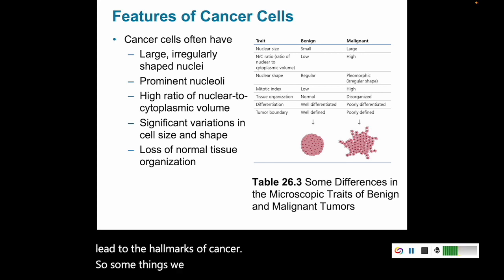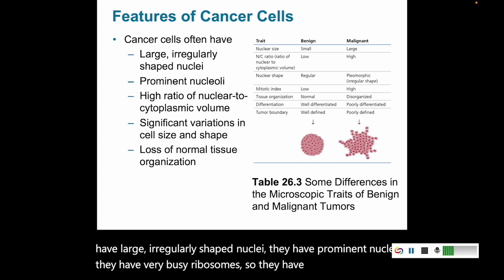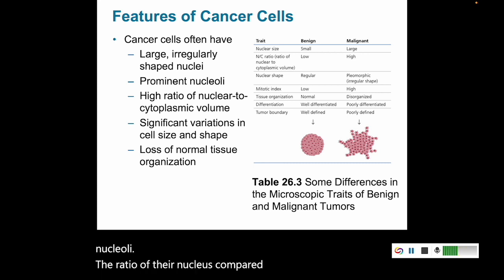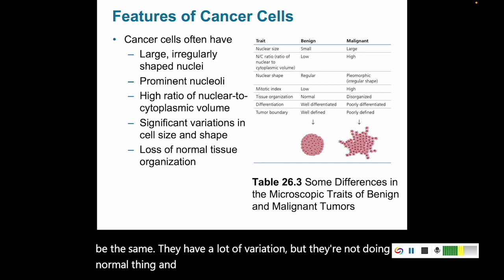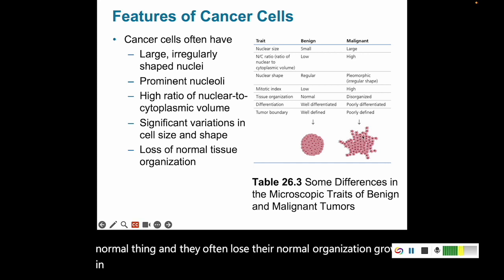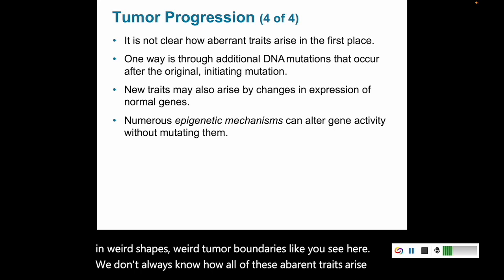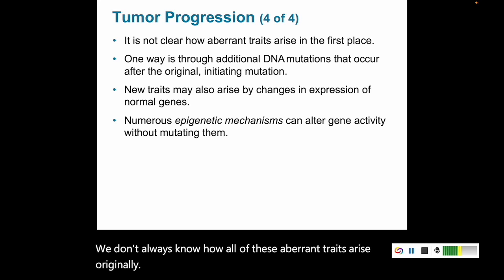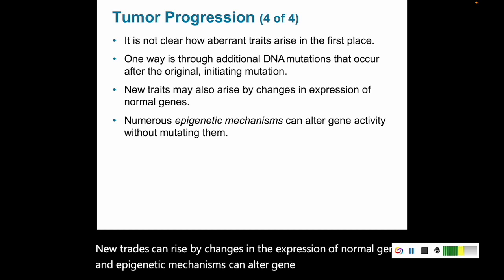Some features we see in cancer cells: they have large, irregularly shaped nuclei and prominent nucleoli, with very busy ribosomes. The ratio of nucleus to cytoplasm is high. Their cells have weird sizes and shapes with a lot of variation, and they often lose their normal organization, growing in irregular shapes with weird tumor boundaries. We don't always know how all of these aberrant traits arise originally, but they probably involve DNA mutations from the original initiating mutation. New traits can arise by changes in expression of normal genes, and epigenetic mechanisms can alter gene activity without permanently mutating that gene.